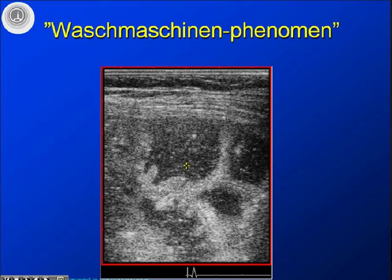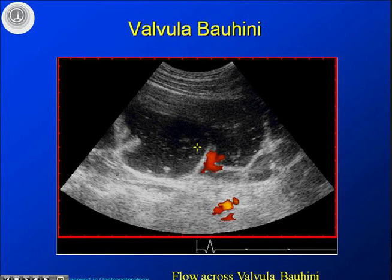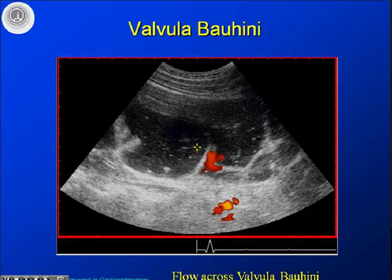Hypermotility — this is one example of how the intestines contract too actively. Typically this is seen in a long-standing non-treated celiac patient. The Germans have a saying: the washing machine phenomenon — it's like looking into a really fast-running washing machine. Moving further down, this is the valvula bauhini, where you can see the distal ileum coming down into the cecum. Using Doppler you can even appreciate how flow goes to and fro over this valve, with great temporal resolution.